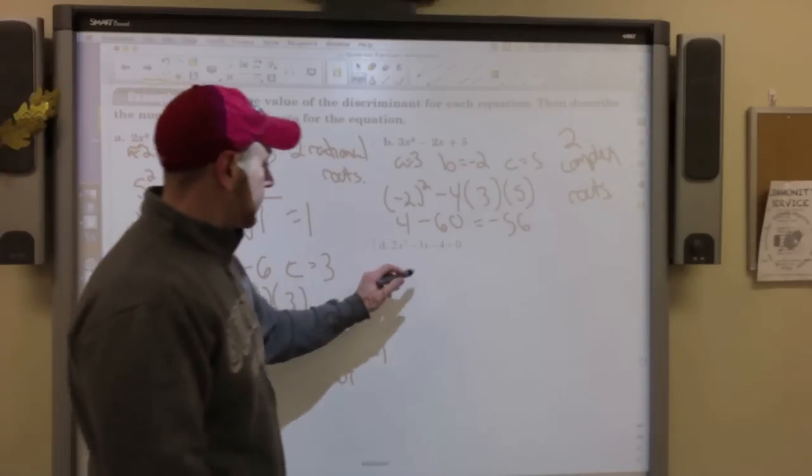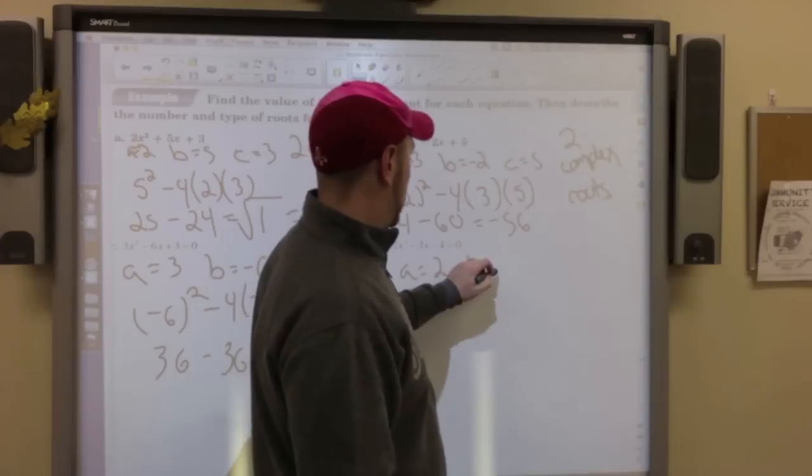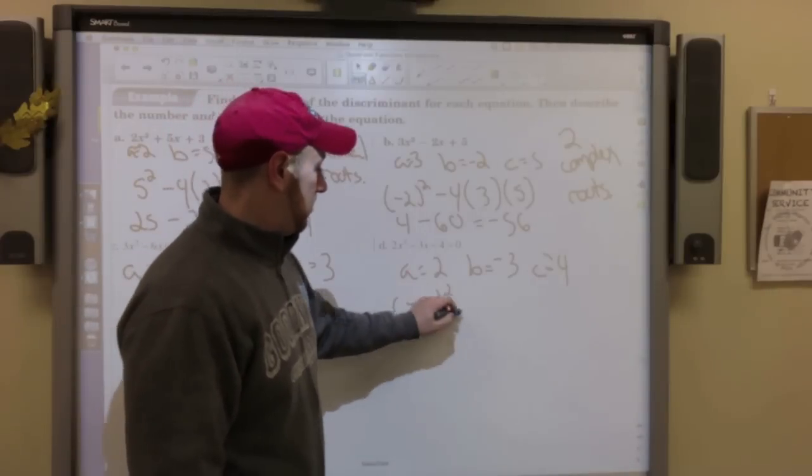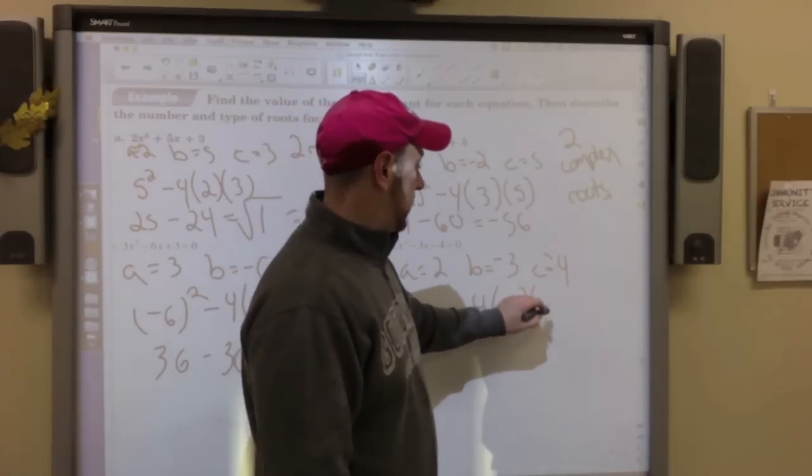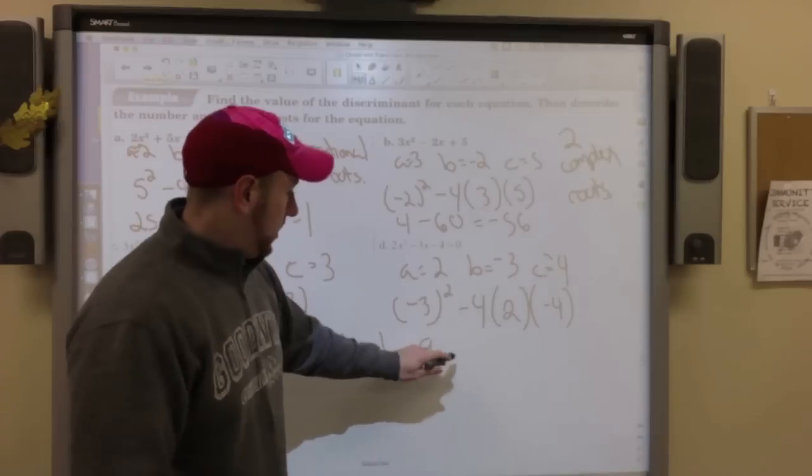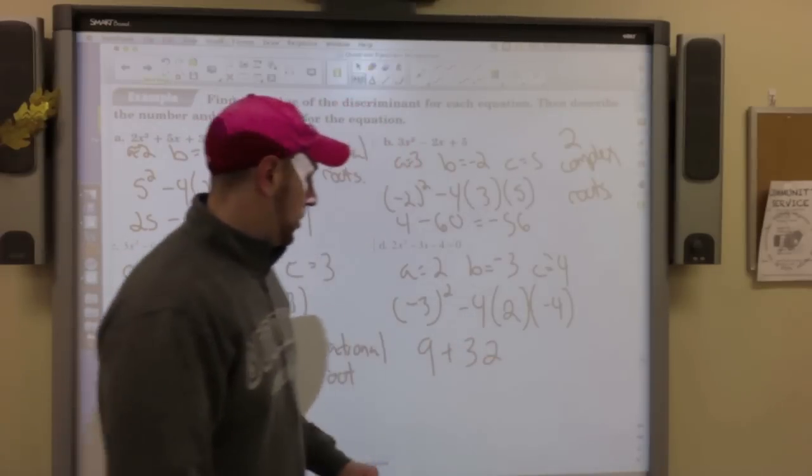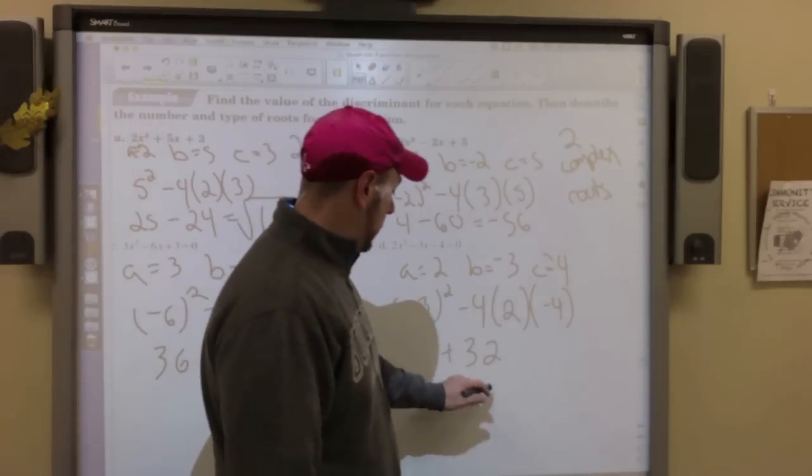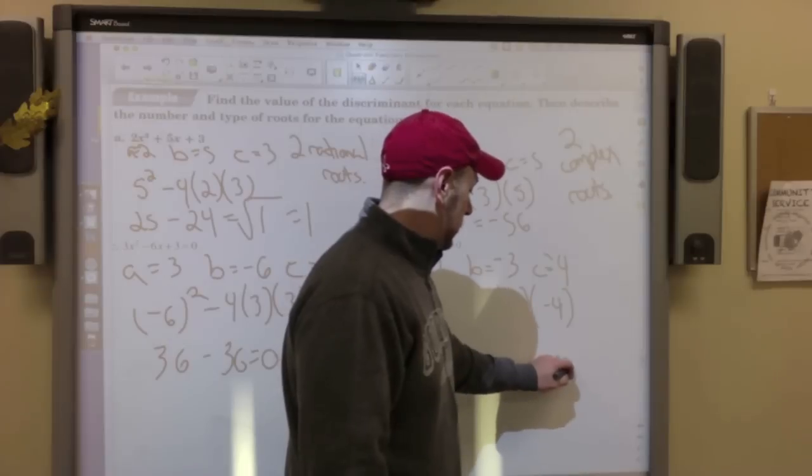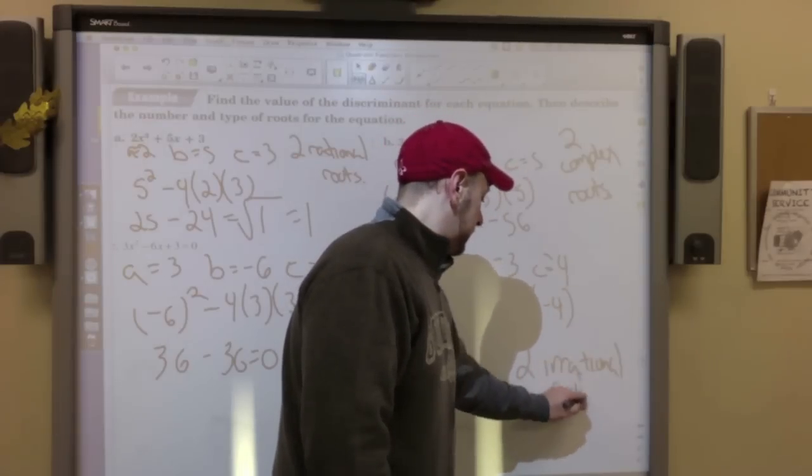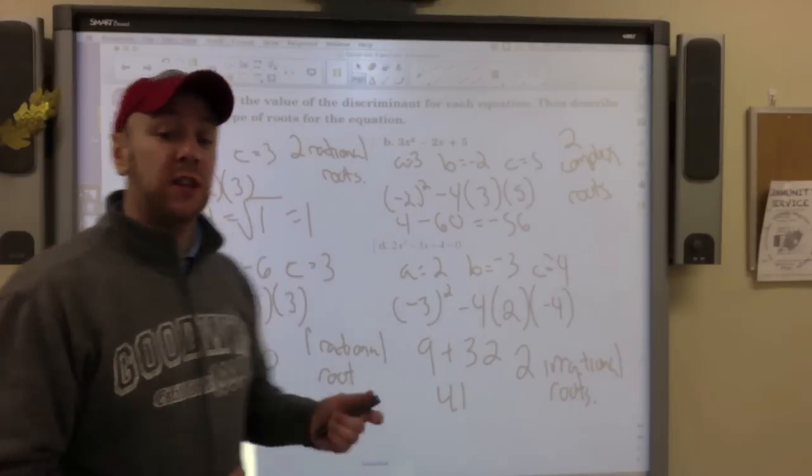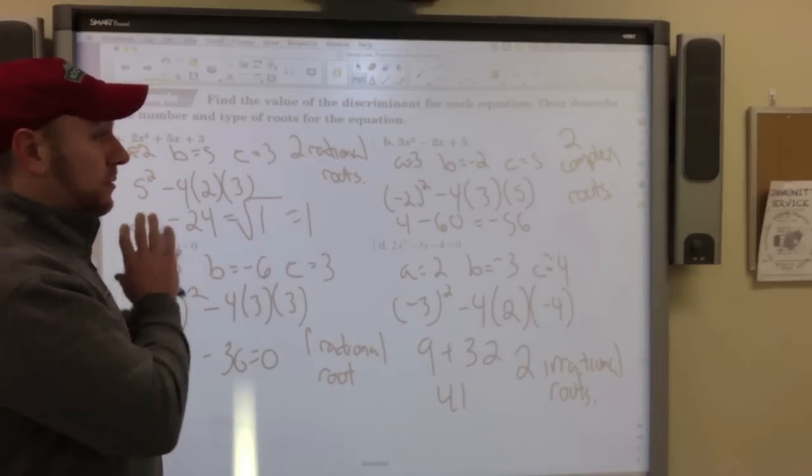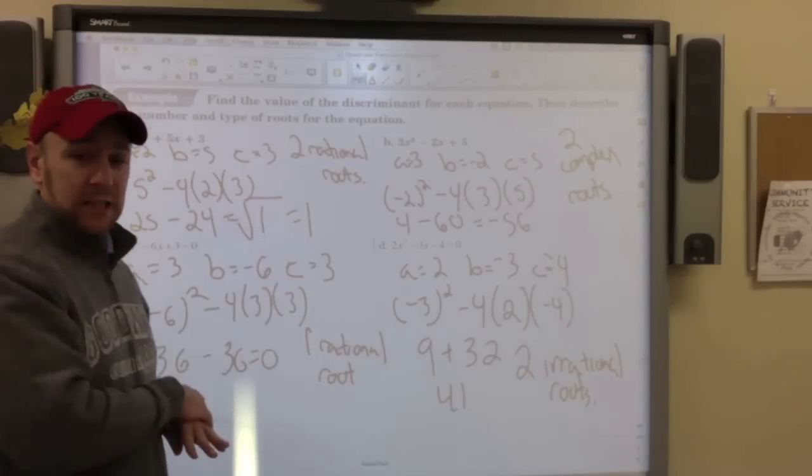And the last one: a is 2, b is negative 3, c is negative 4. Negative 3 squared minus 4 times 2 times negative 4. 9 plus 32 equals 41. I can't find the square root of that. That is not a perfect square. So that means I have two irrational roots. So the discriminant is just used to describe how the roots interact with each other. You're just classifying them and it tells you, does it hit the x-axis, does it not, that sort of thing.